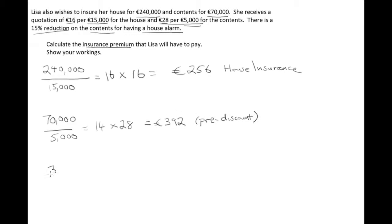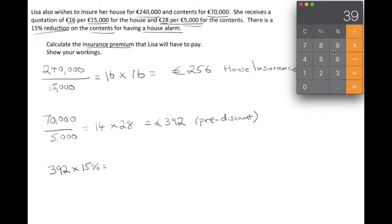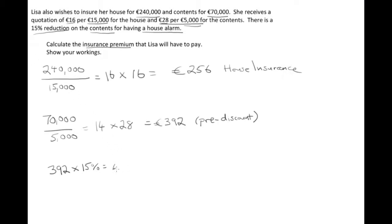We have to figure out what 15% of 392 is. We do that by multiplying 392 by 15% using our calculator: 392 multiplied by 15% gives us 58 euros and 80 cent. So we're going to take 392 and subtract 58.80, which gives us 333.20.